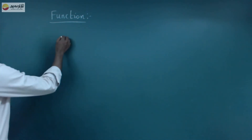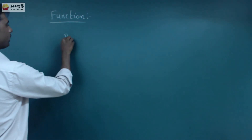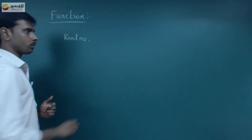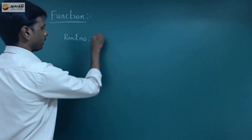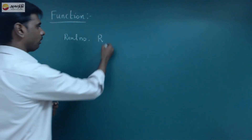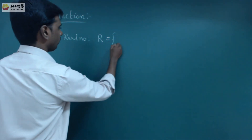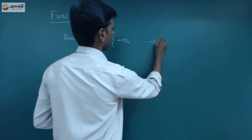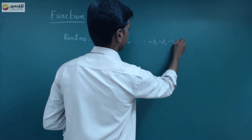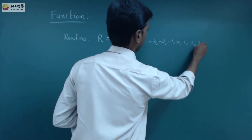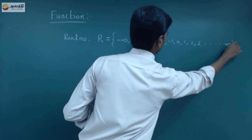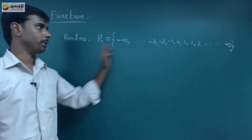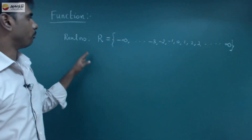What do we know in the set? First, the real number set. The real number set, usually we call R. R is equal to: minus infinity, ..., minus 3, minus 2, minus 1, 0, 1, 2, 3, ... to infinity. This is the real number set — it's the biggest set, the main set.